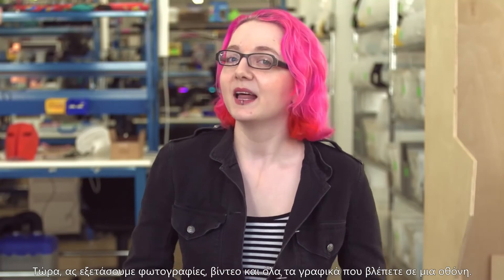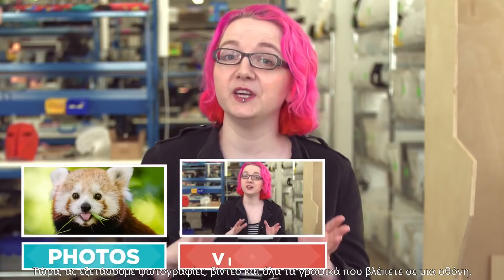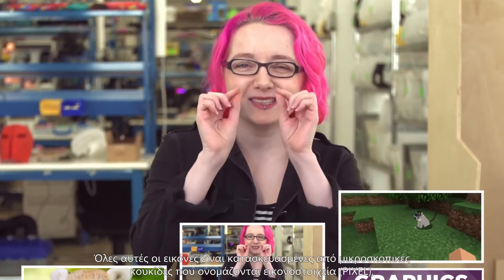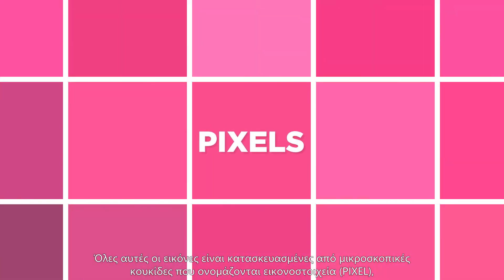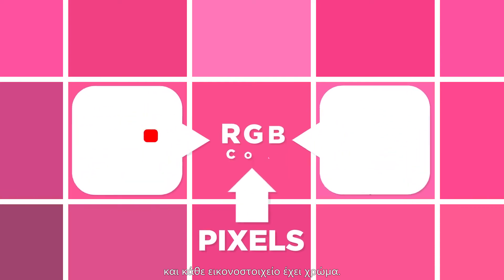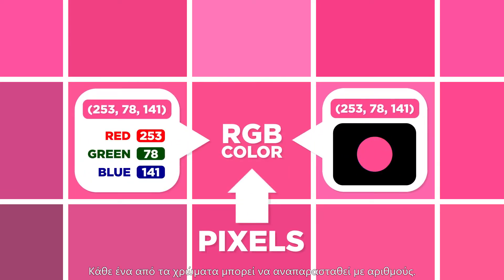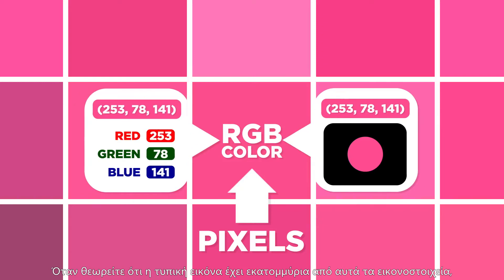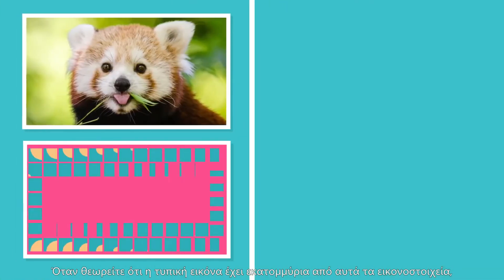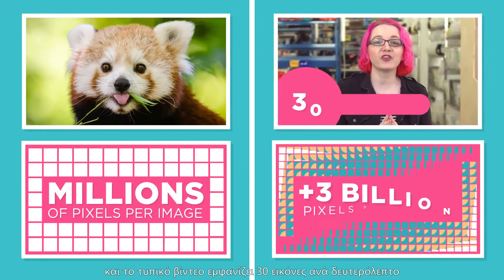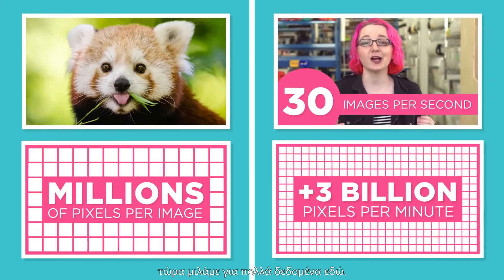Now let's consider photos, videos, and all the graphics you see on a screen. All of these images are made out of tiny dots called pixels, and each pixel has a color. Each of the colors can be represented with numbers. When you consider that a typical image has millions of these pixels, and a typical video shows 30 images per second, we're talking about a lot of data here.